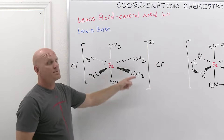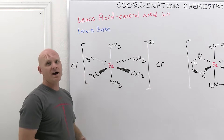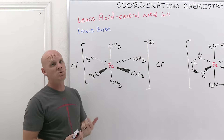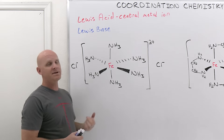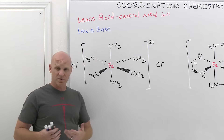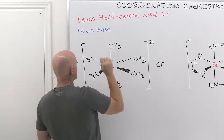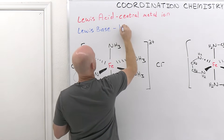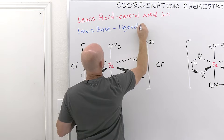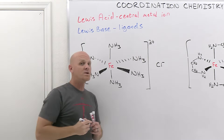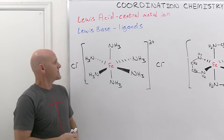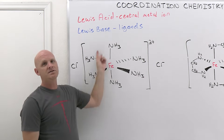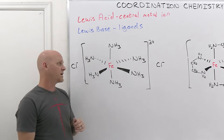The central metal ion is going to be bonded to one or more molecules on the outside. They could be neutral molecules or they could be anions — most of these are going to be anions, but some will be neutral. They all have to have a lone pair of electrons to donate to make that bond. That's what makes them the Lewis base, and we call them ligands. So you have a single central metal ion bonded to multiple ligands.